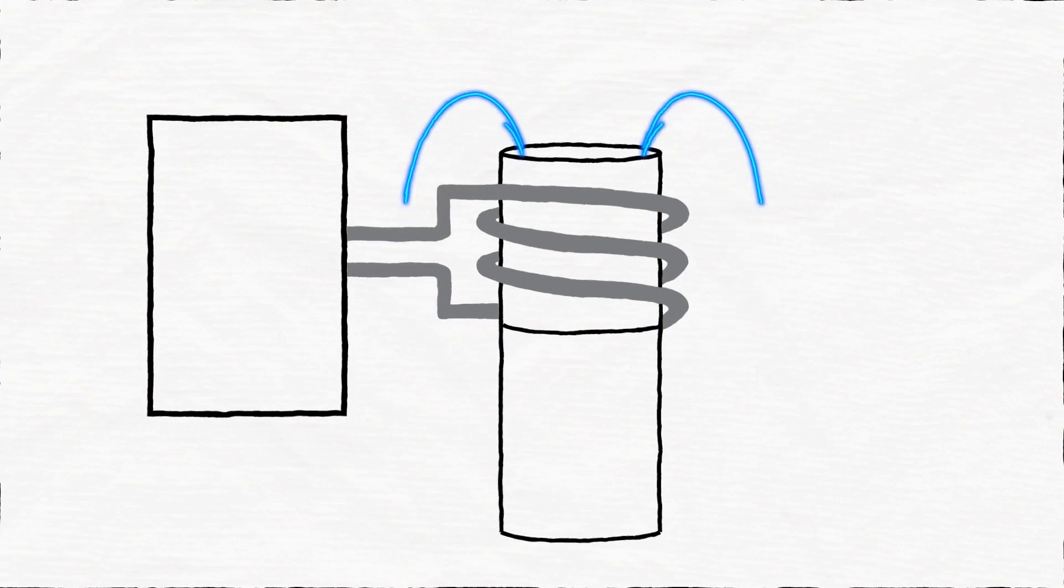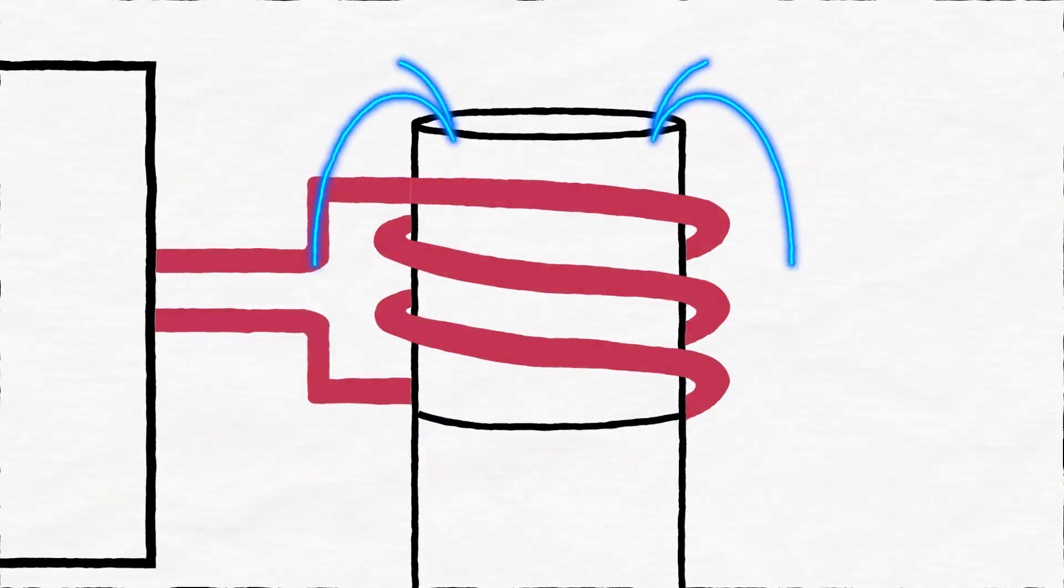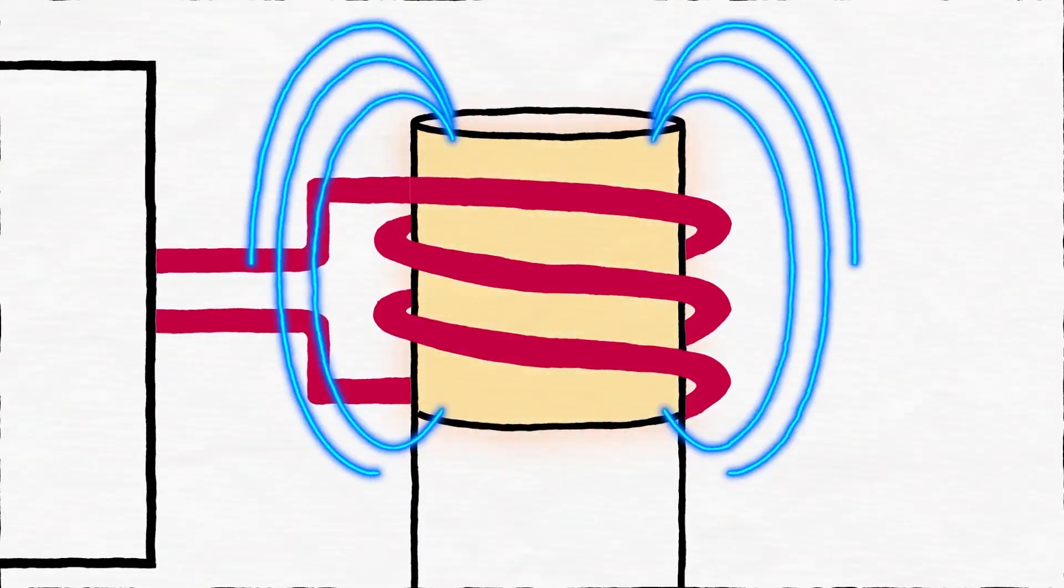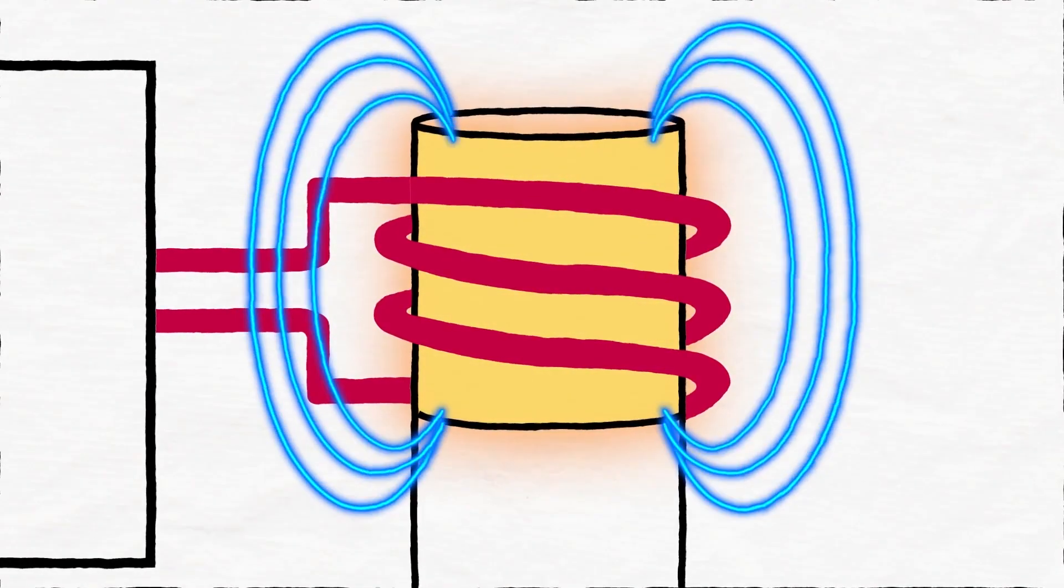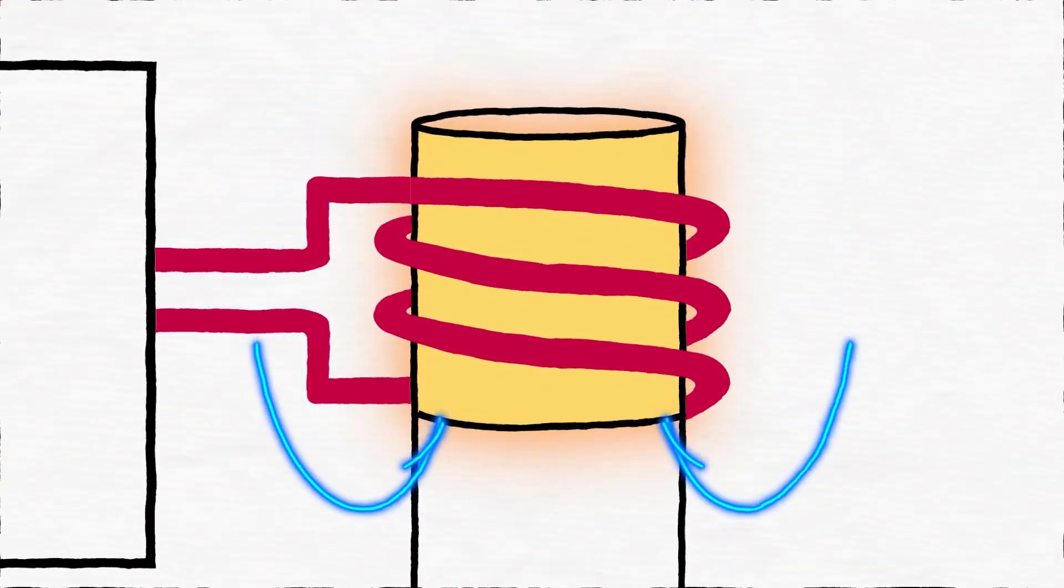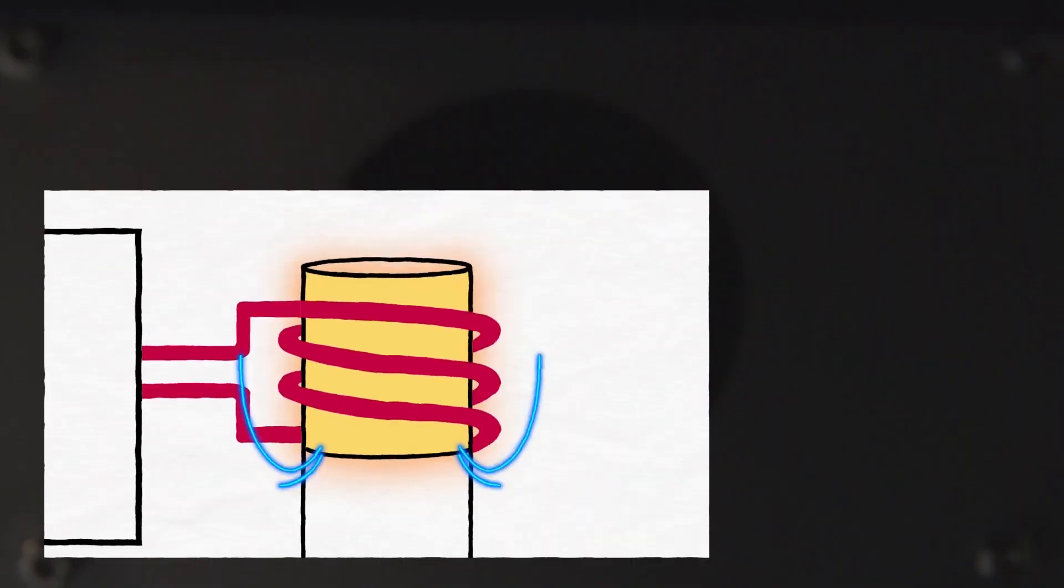Induction furnaces use high-voltage, high-frequency AC power to induce an eddy current into conductive materials. The eddy current leads to joule heating, melting the sample. High-frequency induction is fast, really fast.